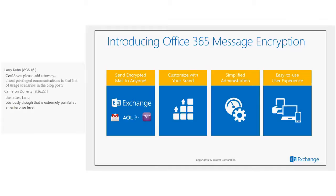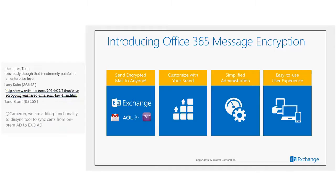All the recipient needs is a Microsoft account to log in and view their message. The second pillar is the capability to enhance your organization's brand through custom controls that let you further customize your message. The third pillar is simplified administration — those familiar with Exchange Hosted Encryption will remember that setting up encryption rules required multiple actions, detecting specific headers and then encrypting.